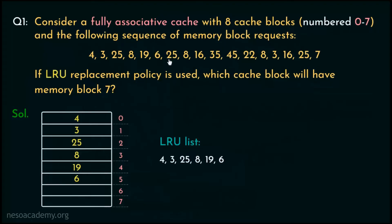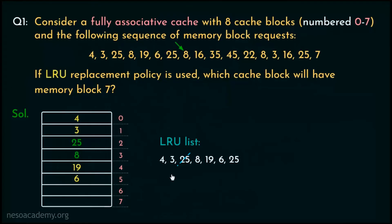After block number 6 has been enlisted, the next block request is 25. This will result in a cache hit since it's already present inside the cache. However, the LRU list will be updated, adding 25 at the end as it is now the most recently used block. The next block request is 8, which also results in a cache hit, and the LRU list is updated placing 8 at the end, indicating 8 is now the most recently used block.